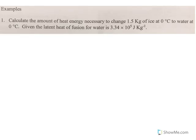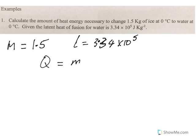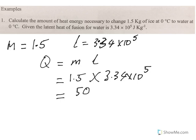So let's have a look at a couple of examples. First, a more straightforward one. This one here says calculate the amount of heat energy necessary to change 1.5 kilos of ice at zero degrees into water at zero degrees. And we're told the latent heat of fusion is 3.34 by 10 to the 5 joules for every kilo. So how much heat is required? That's simply 1.5 times 3.34 by 10 to the 5. And if you do that on your calculator, you get 501,000 joules.